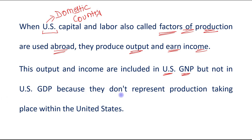US GDP does not include this because it doesn't represent production taking place within the United States. The US factors of production were used abroad, in a foreign country, so the output produced there is included in that foreign country's GDP — because production occurred in the foreign country. But because the factors of production belong to the US, that is the reason they are included in US GNP.